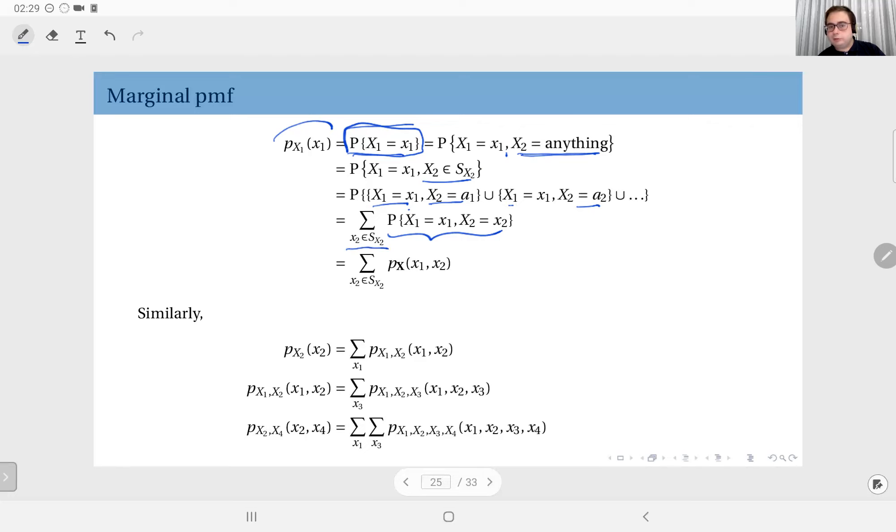That means I can obtain this probability by adding up these joint probabilities for all values x2 can take. And this joint probability, you see, by definition, is the joint PMF of x1 and x2.